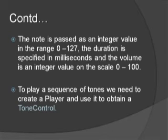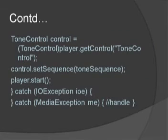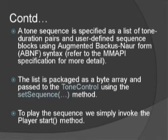To play a sequence of tones, we need to create a player and use it to obtain a tone control. The tone sequence is specified as a list of tone-duration pairs and user-defined sequence blocks using ABNF syntax. A list is packaged as a byte array and passed to the tone control using the setSequence method. To play the sequence, we simply invoke the player start method.